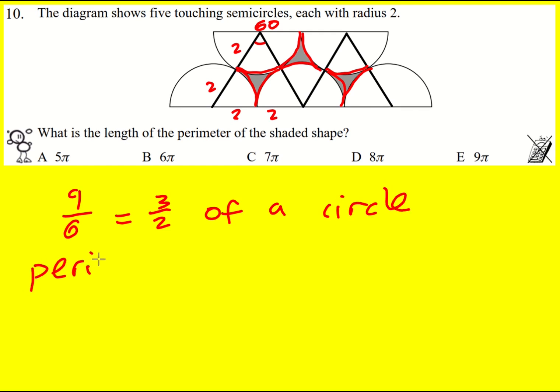And therefore the perimeter is going to be three over two times the perimeter of one circle, which is π times the diameter, or in this case 2π times the radius, because we're given the radius.